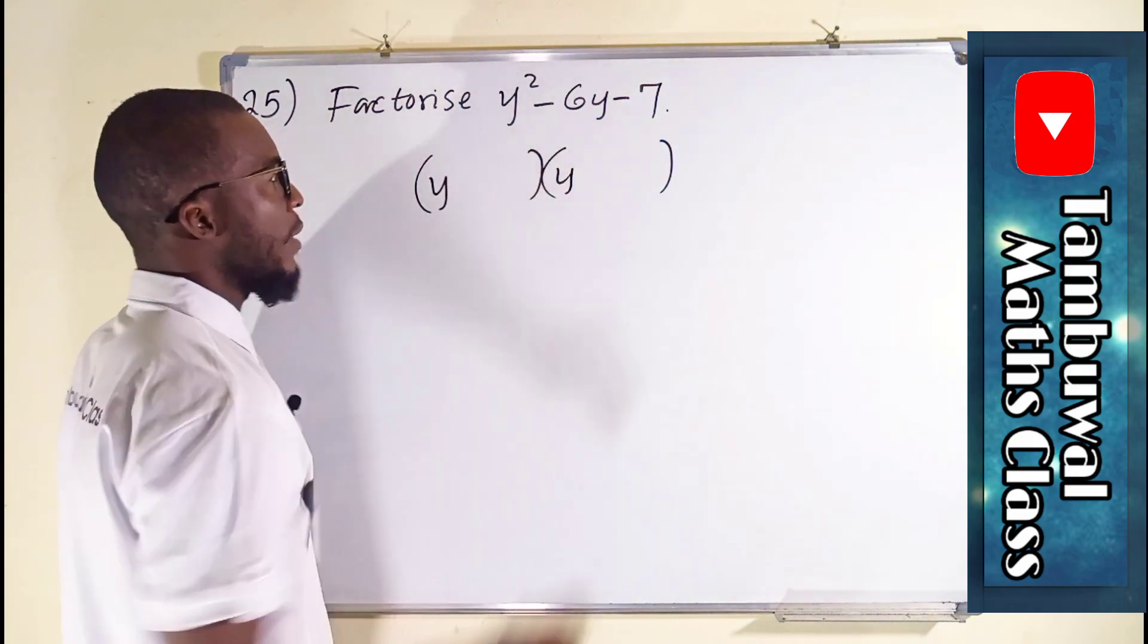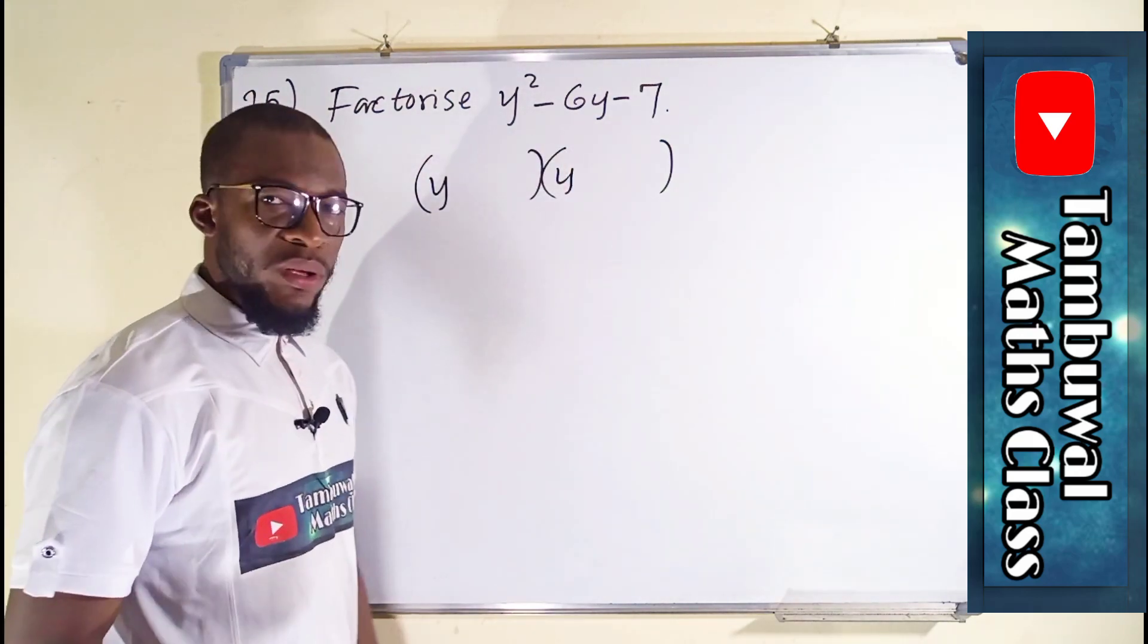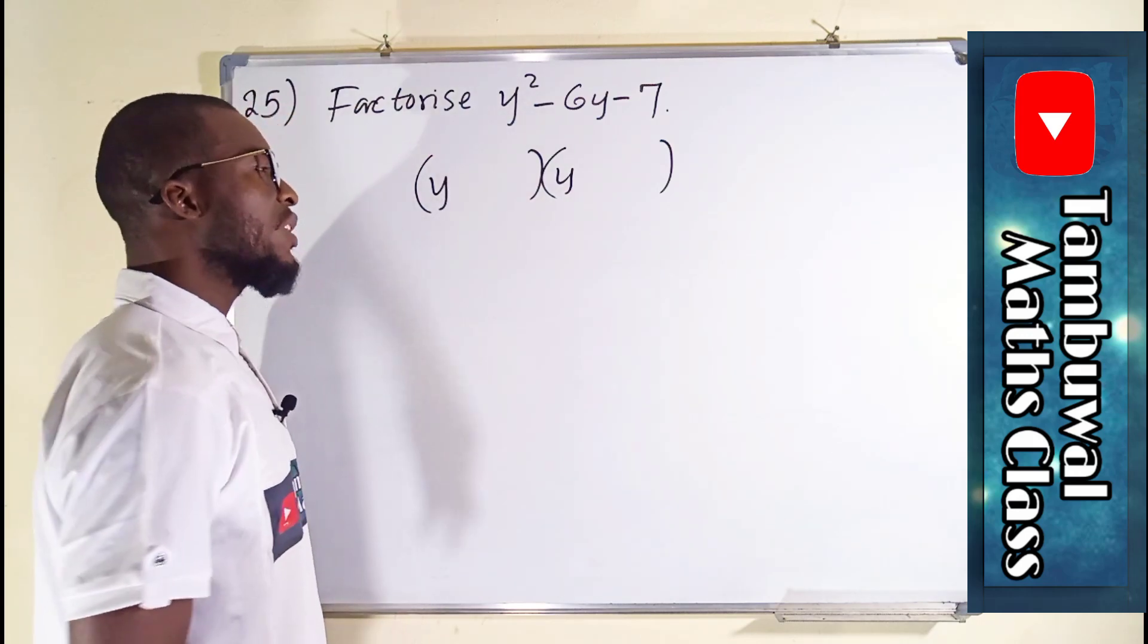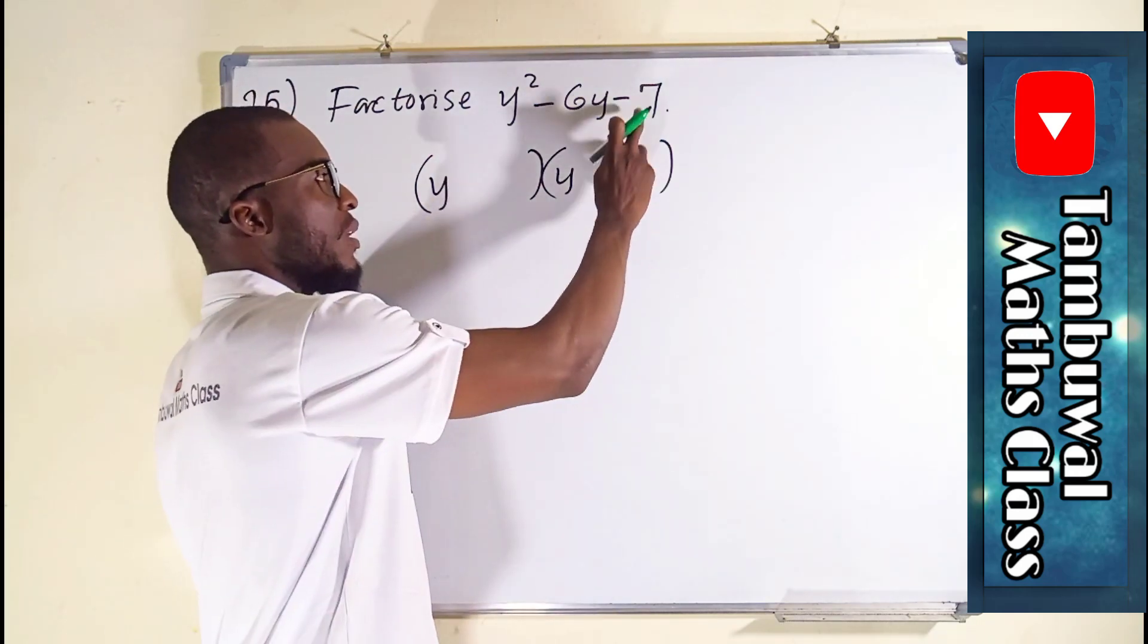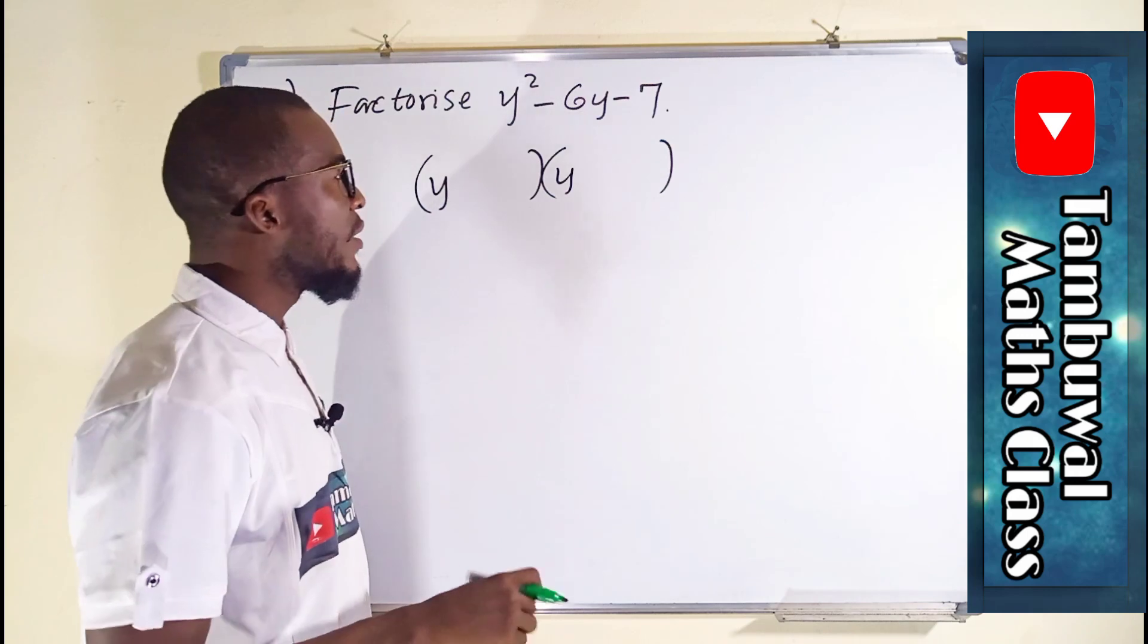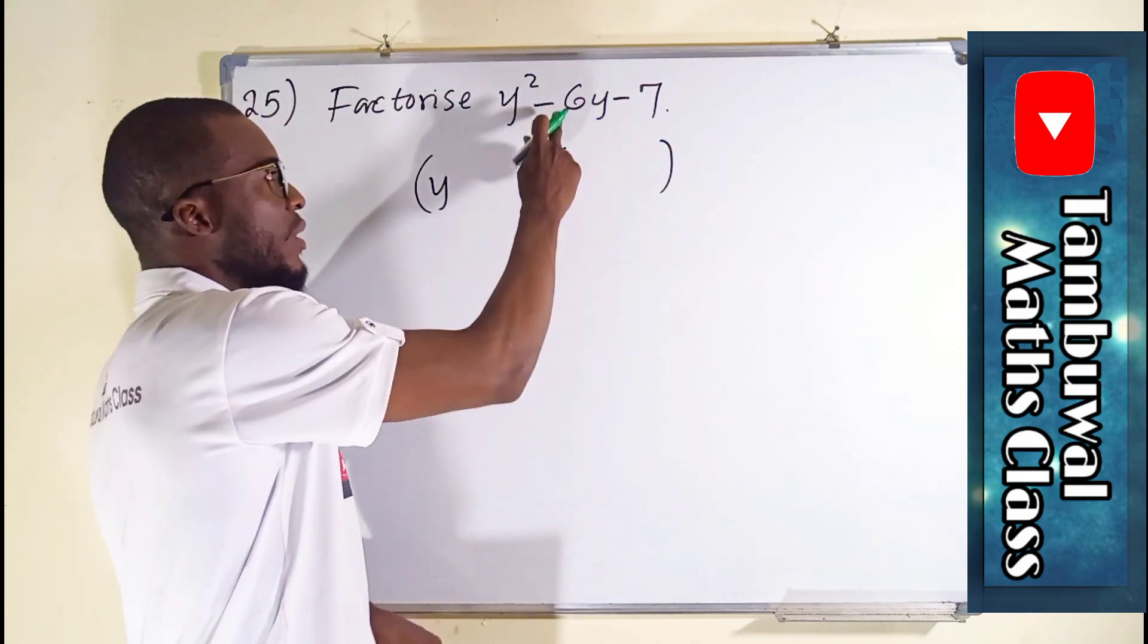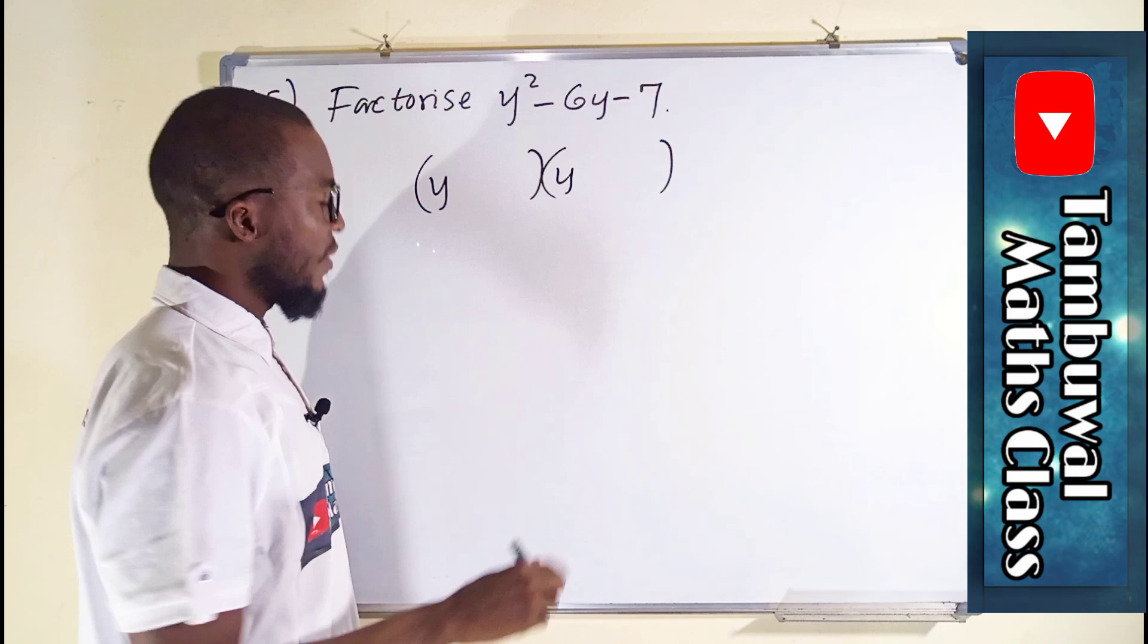Write y here and write y here. We are going to think of two numbers which when we multiply them together we are going to get this constant which is minus seven and when added up together we get the coefficient of the middle term which is negative six.